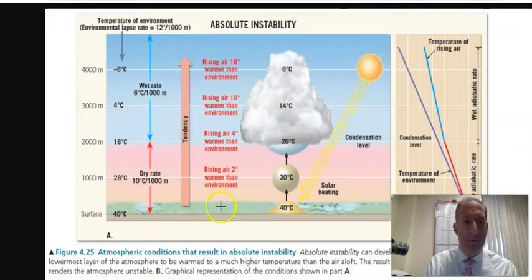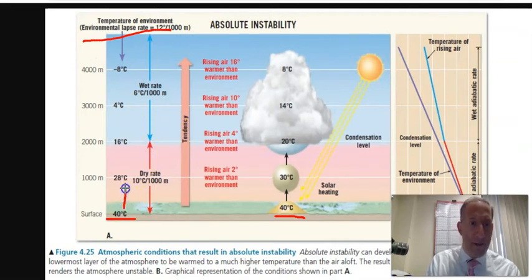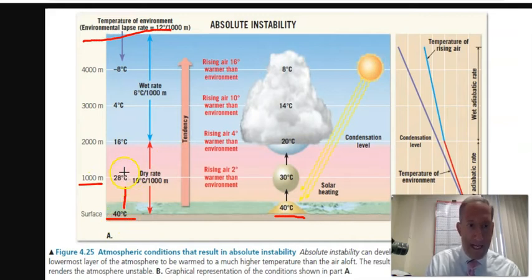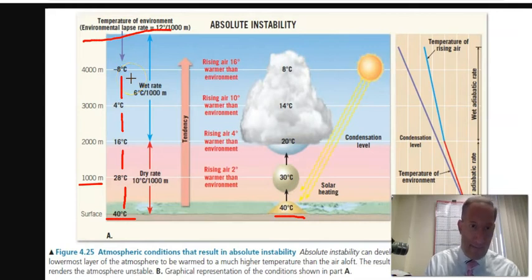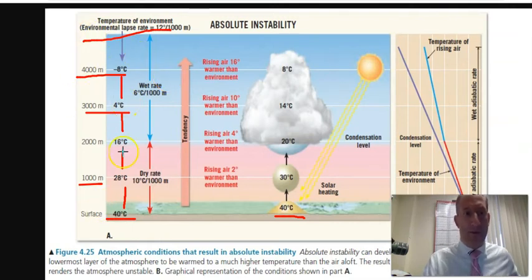To find the environment column, start with 40°C and subtract 12 for each 1,000 meters: 40 to 28, 28 to 16, 16 to 4, 4 to negative 8. This goes up to 4,000 meters — though it could extend further. That gives us the environmental temperature profile.